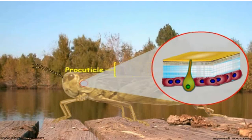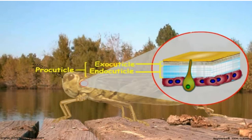After the molt, the procuticle differentiates into the endocuticle and the exocuticle. The thick inner portion of the cuticle is termed the endocuticle. It is usually the thickest layer of the cuticle and is soft and flexible. Endocuticle is deposited throughout the time between the molts.